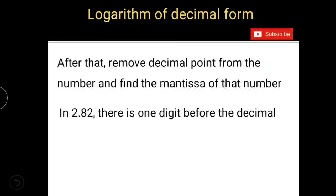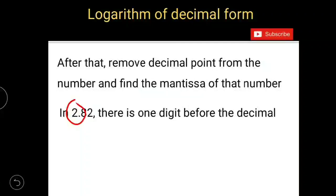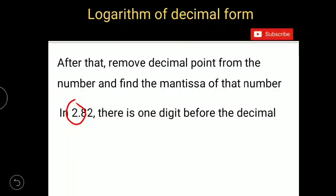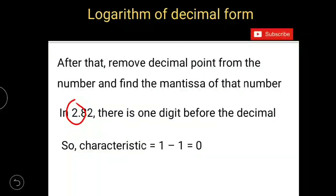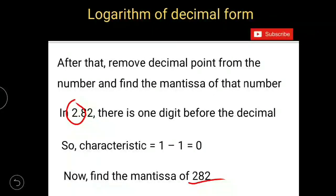For example, if you want to find out logarithm value of 2.82, first you see how many digits are present before the decimal. There is one digit and subtract 1 from it. So characteristic is 0. After that, remove the decimal point. Then it becomes 282. Now find out the mantissa of 282.